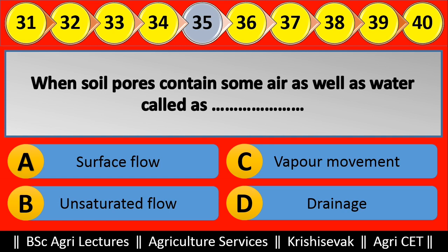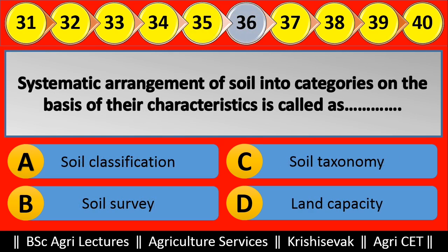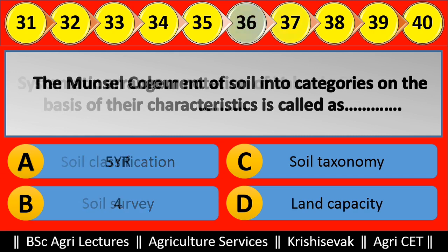Question 36: Systematic arrangement of soil into categories on the basis of their characteristics is called blank. Options are: (a) Soil classification, (b) Soil survey, (c) Soil taxonomy, (d) Land capability. Right answer is Soil classification, option A.